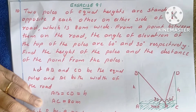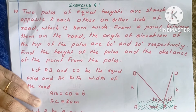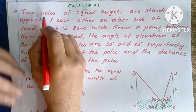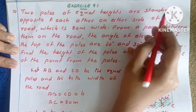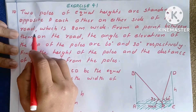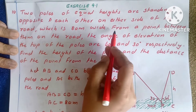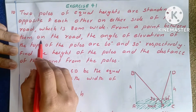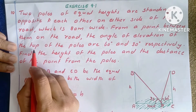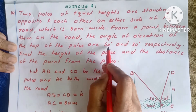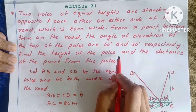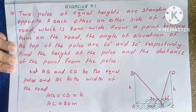Dear Children, in the next exercise 9.1, 10th question: Two poles of equal height are standing opposite each other on either side of a road which is 80 meters wide. From a point between them on the road, the angle of elevation of the top of the poles are 60 degrees and 30 degrees respectively. Find the height of the poles and the distance of the point from the poles.